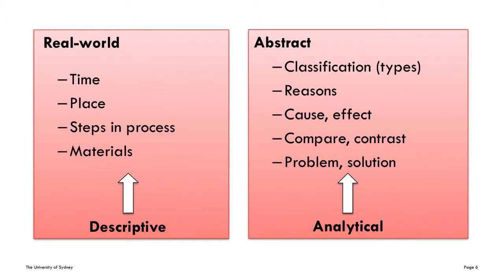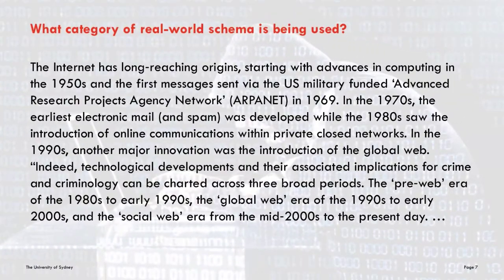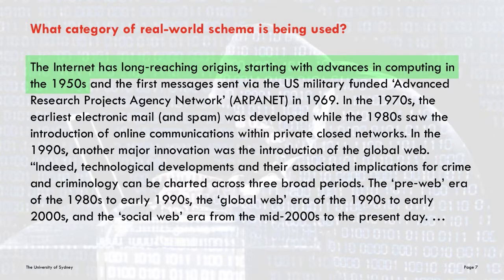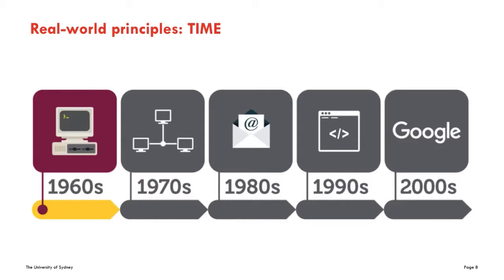It is notable that real-world schemas tend to be things we mostly agree on, while abstract schemas are open to interpretation. Now let's take a closer look at how these schemas are used to organize academic writing, starting with a real-world schema. If you thought the category being used in this short text was time, you would be quite correct. This is an example that uses time to introduce a history of the internet. The writer has started the paragraph with the earliest events and worked his way through to the latest events. Time is a great organizing schema to give a chronological overview of events or to show the development of ideas.